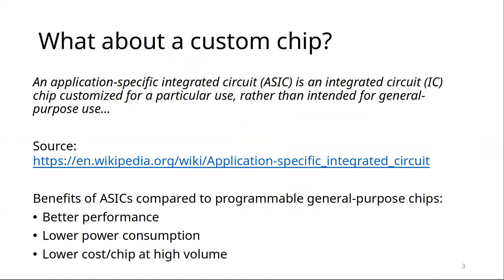The most specific term is called an ASIC — Application Specific Integrated Circuit — basically a chip that you specifically build for one purpose. The benefits of ASICs compared to general-purpose chips are better performance, lower power consumption, and they are generally cheaper at high volumes.